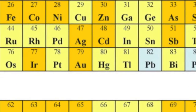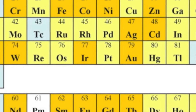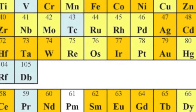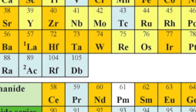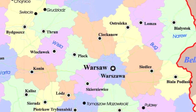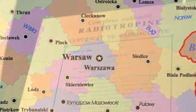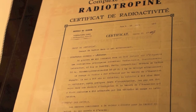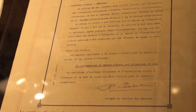In 1898, the Curies discovered two other radioactive elements: polonium, element 84, and radium, element 88. They named polonium after Marie Curie's native country of Poland. In the title of a paper describing the element polonium, the Curies introduced the term radioactive to the world.